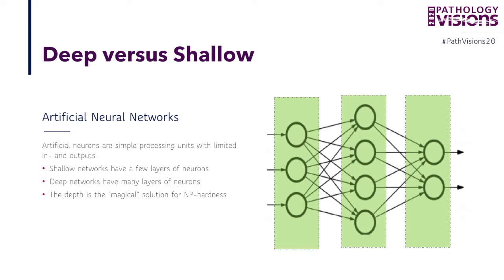That goes back to the discussion between shallow and deep networks. An artificial neuron is a simple processing unit with some inputs and outputs. Shallow networks usually have a few layers of those neurons — for example, the first layer has three, the second has four, and the last has two artificial neurons. Deep networks have many more layers and neurons, while shallow networks have only a few — generally three or four layers.